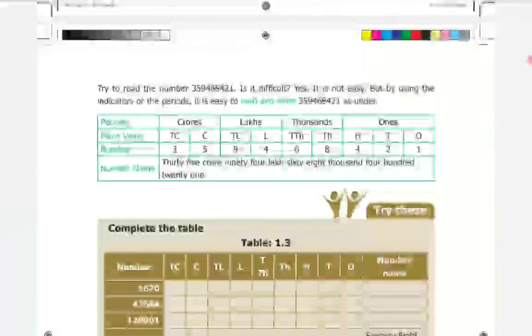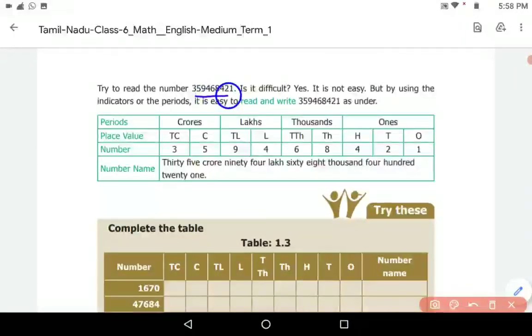Try to read the number 359468421. Is it difficult? Yes, it is not easy. But by using the indicators or the periods, it is easy to read and write 359468421 as under.